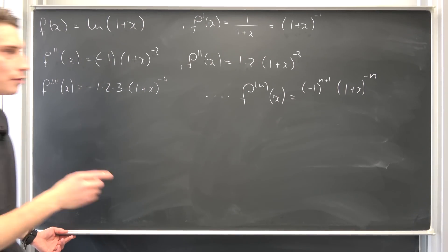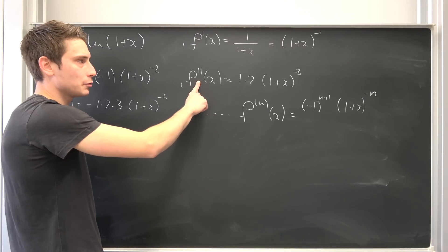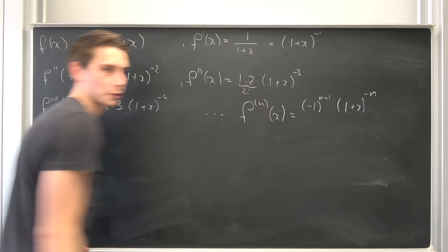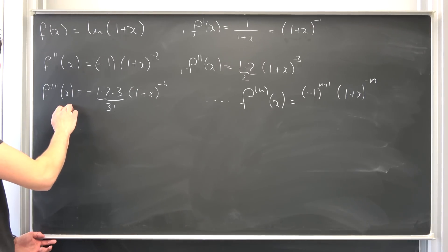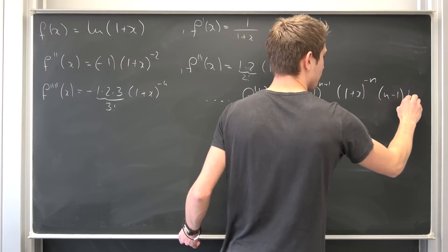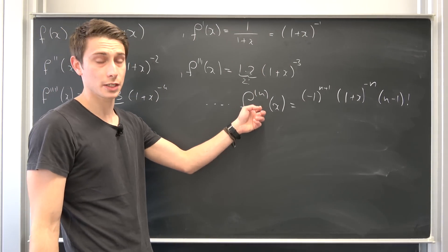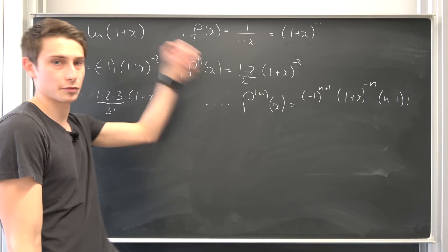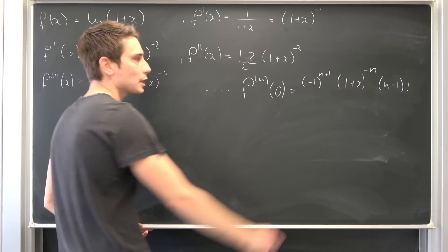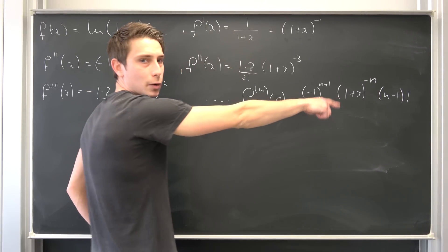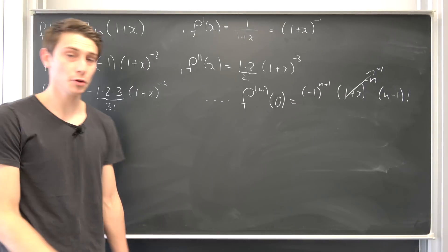On the third derivative we have 1 times 2, which is nothing but 2 factorial. On the fourth derivative we have this 3 factorial term. So meaning we have n minus 1 factorial right here. As always with Taylor and Maclaurin series expansions, we have to find those derivatives at a certain point. For the 0 case, we are going to get this is going to stay how it is, and then we have 1 plus 0, which is just 1 to the negative nth power. So this is just going to be 1 all the time. Pretty damn good.